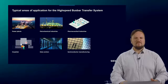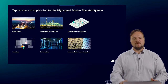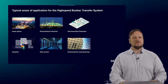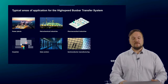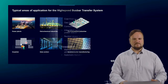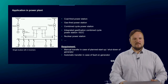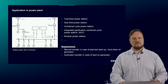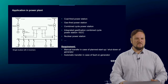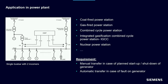Where can we find such a high-speed bus bar transfer system? It is usually used in power plants, petrochemical industry, pharmaceutical industry, hospitals, data centers, or in semiconductor manufacturing. Looking deeper at the application in a power plant, we have the generator, auxiliary buses, and different power sources — the running source and the alternative source. This is typically used in coal-fired, gas-fired, combined cycle, or nuclear power stations.